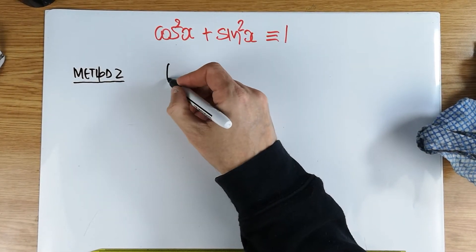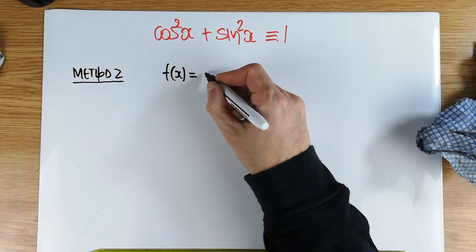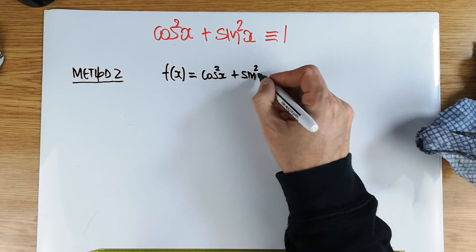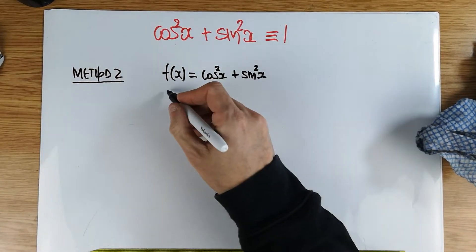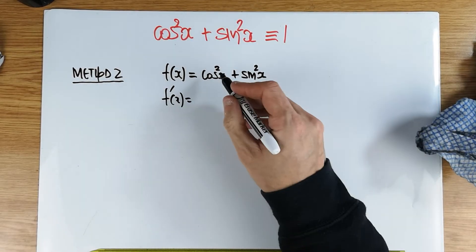In order to prove this, you define a function and you say, you know what? f of x, I define it to be as the function cos squared x plus sine squared x. Then I'm going to differentiate it. So f dash of x, using differentiation rules.